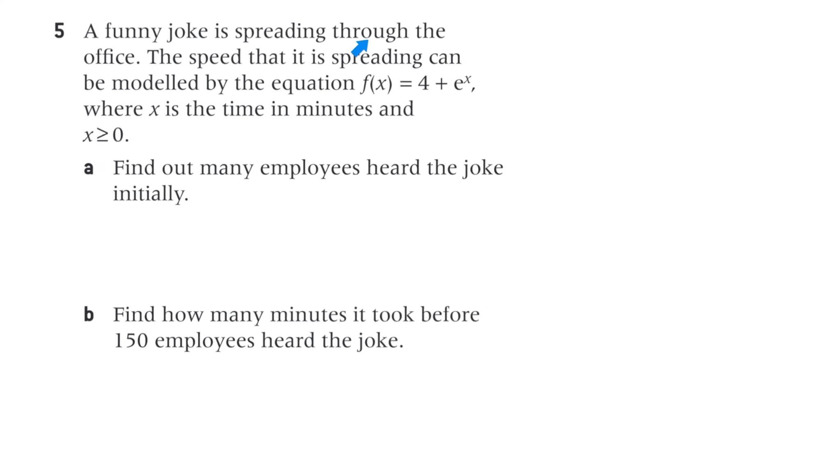Question 5: A funny joke is spreading through the office. The speed that it is spreading can be modelled by the equation, this one, where x is the time in minutes and x is greater than or equal to 0. Part a, find out how many employees heard the joke initially. Well, that's initially, that must be at time equals 0. So, if where x is 0, the function where x equals 0 is 4 plus e to the 0, that's 5.